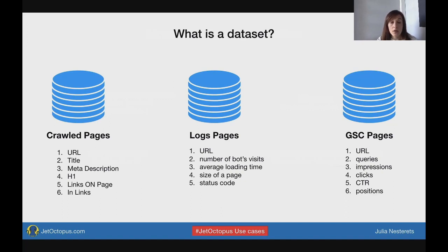All of these data sets have their own lines and their own attributes of the URL. Crawled pages are about URL, title, meta description, H1, links on the page, and in-links. Logs pages have data about URL, number of bot visits, average loading time, size of a page, and status code. Google Search Console information covers URL, queries, impressions, clicks, CTR, and positions.